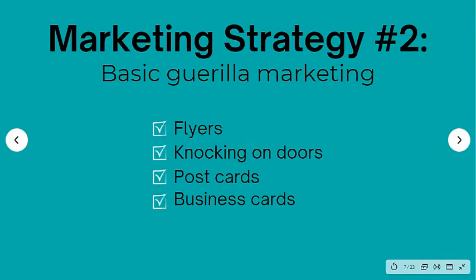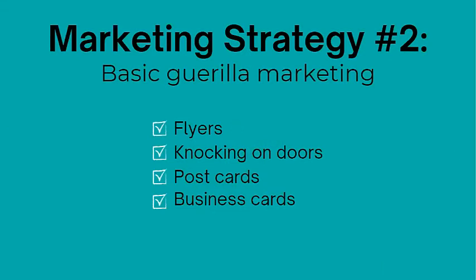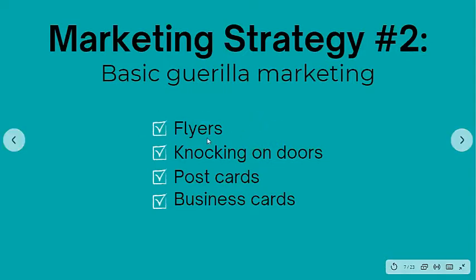Marketing strategy number two is basic guerrilla marketing: flyers, knocking on doors, postcards, business cards. With business cards, I don't do them in the traditional sense — I'll talk about that in a moment. But flyers are really cool, especially if you're advertising in your local market. You want to have them everywhere — your local grocery store. Something I used to do that worked quite well: I'd go into restroom stalls and put my flyer on the stall door so that when someone was using the restroom, they'd be staring at my flyer. Try that at your own risk — I don't know if restaurant owners like it, but I was just trying to grind it out in the beginning.